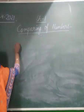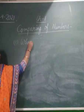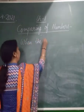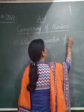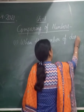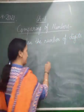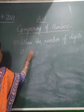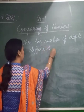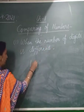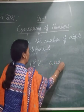First case: when the number of digits is different. Let's take an example — 182 and 43.